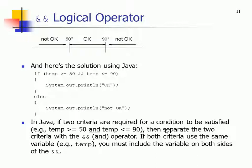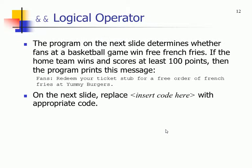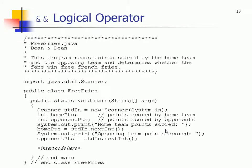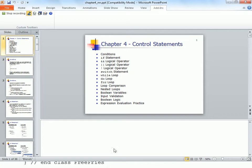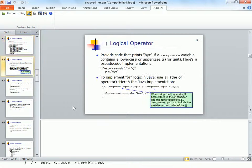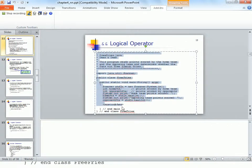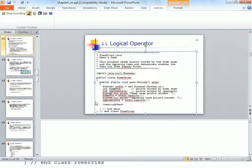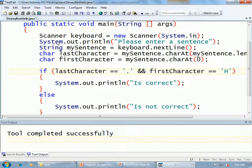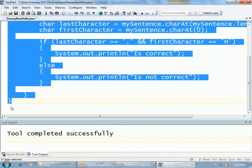The program on the next slide determines whether fans at a basketball game win free french fries. If the home team wins AND scores at least 100 points, print 'Redeem your ticket stub for a free order of french fries at Yummy Burgers.' We've got to make an if statement with AND because they've got to do two things: win and score at least 100.